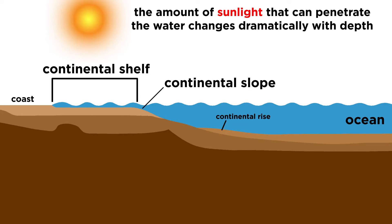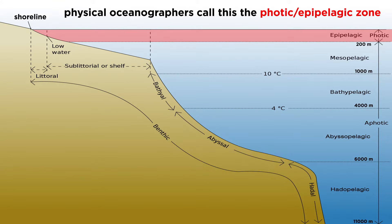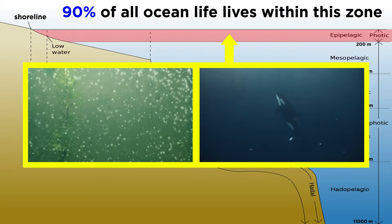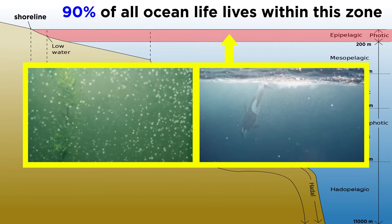As the depth changes along the continental shelf and slope, the amount of sunlight that penetrates through the ocean water changes drastically. At the shallow depths along the continental shelf, between 0 and 200 meters, there is enough light present for photosynthesis to take place. Physical oceanographers — scientists who study the interactions of the ocean with light, wind, and rock — have called this top layer the photic or epipelagic zone. Pelagic means open ocean and refers only to areas far from the influence of the shore and the ocean floor. Ninety percent of ocean life, from whales and dolphins to green algae and phytoplankton, lives within the epipelagic zone.